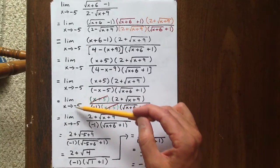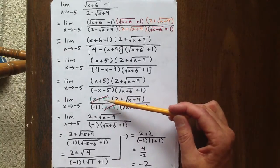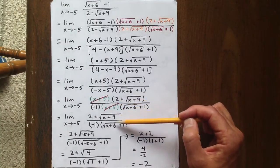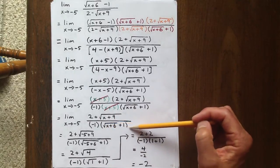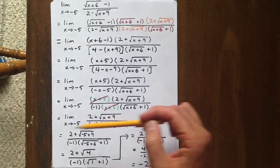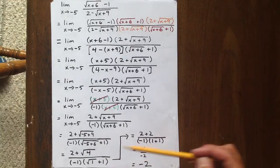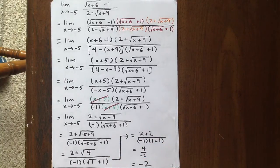That is the offending factor, x plus 5. We can cross it out of the numerator and the denominator, and we're left with 2 plus the square root of x plus 9 over negative 1 times the square root of x plus 6 plus 1. Substituting in a value of x equal to negative 5 now is not a problem, and when we simplify, we get our ultimate answer for the limit of negative 2.